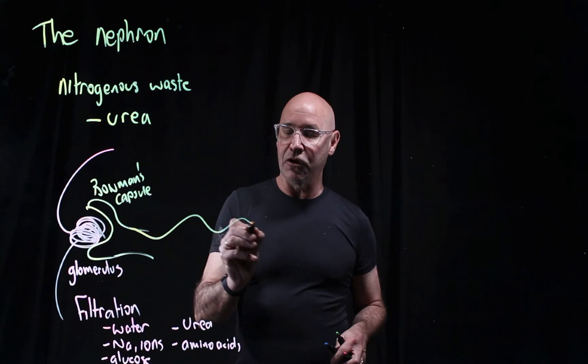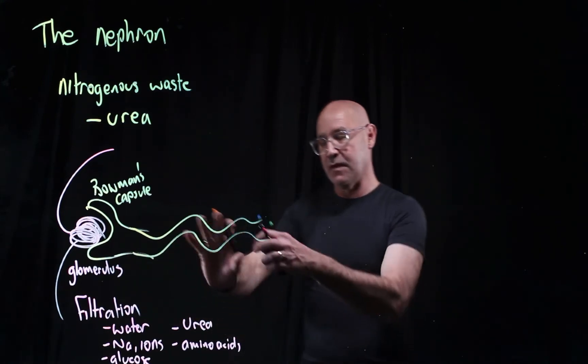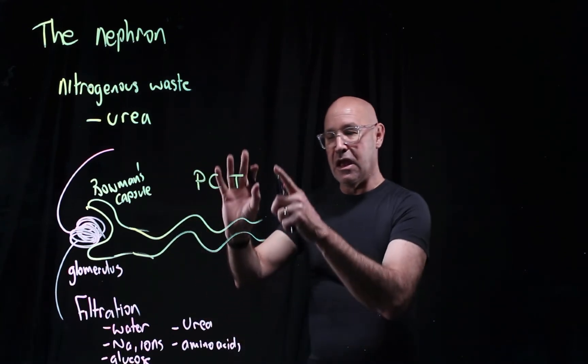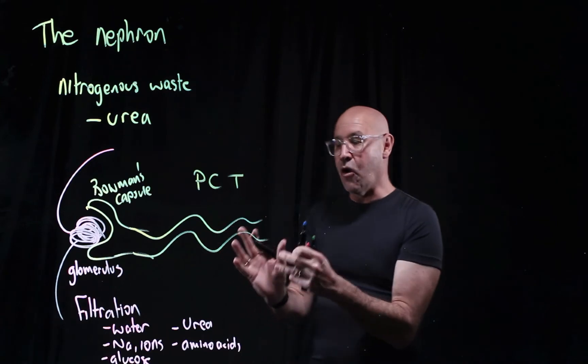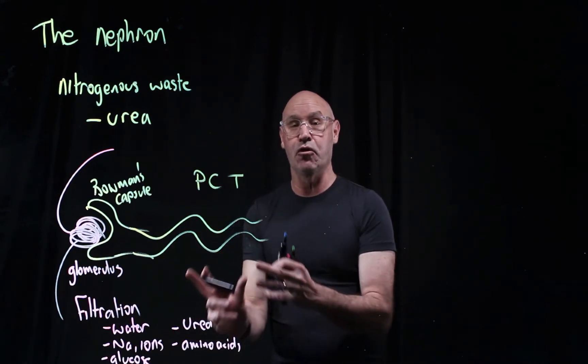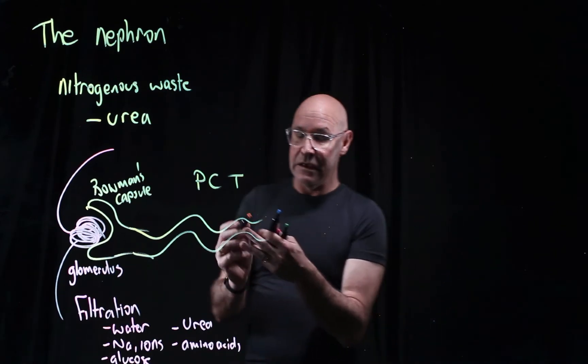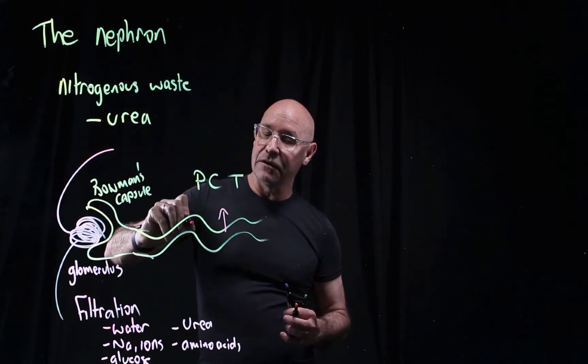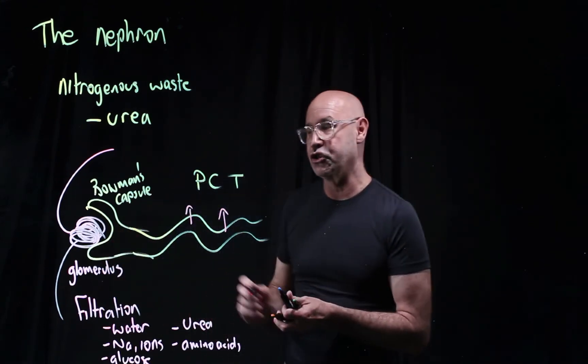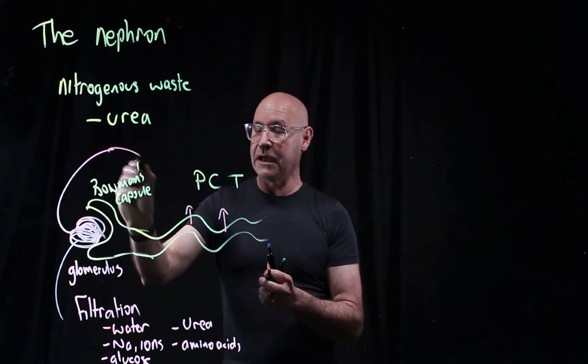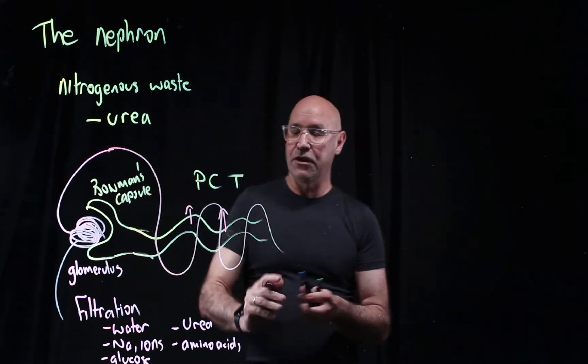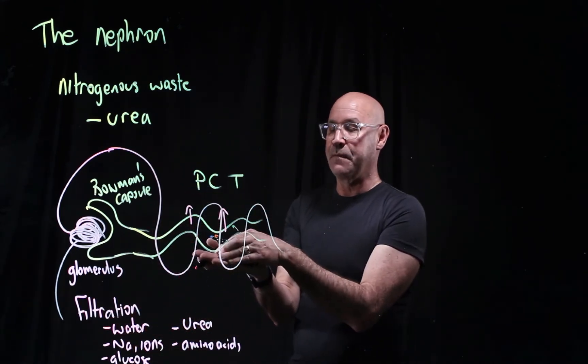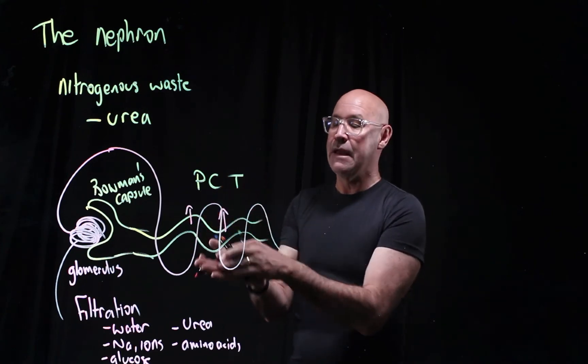After that, we have this wibbly-wobbly area called the proximal convoluted tube. This is where all the important stuff gets reabsorbed back into the blood. All the important things leave the proximal convoluted tube and get reabsorbed because blood vessels wrap around the nephron.